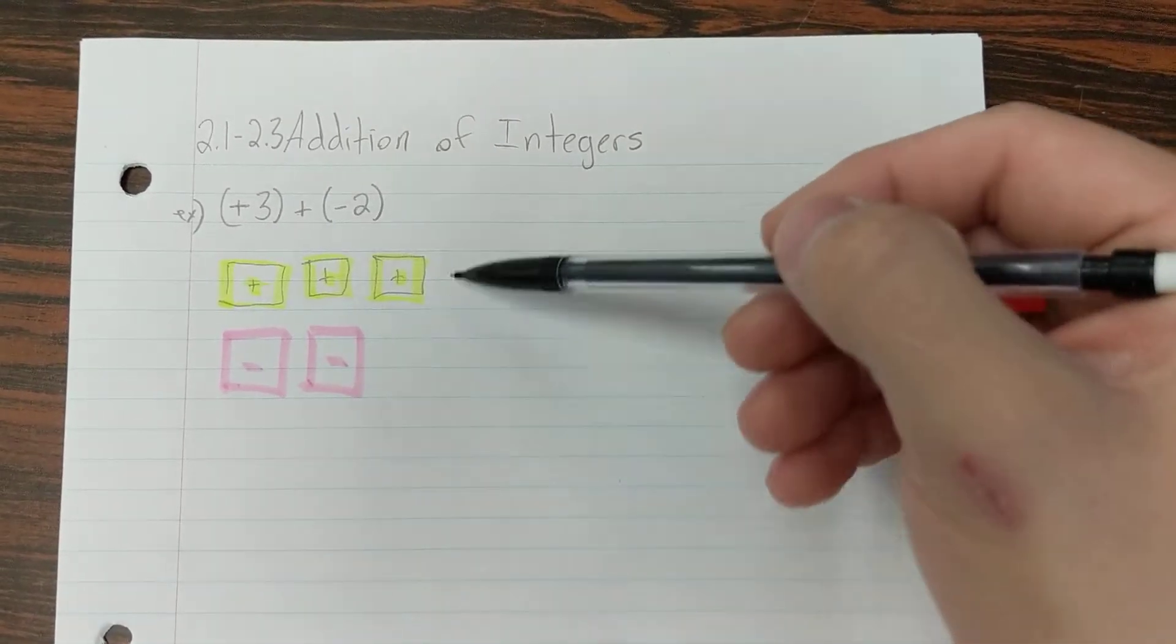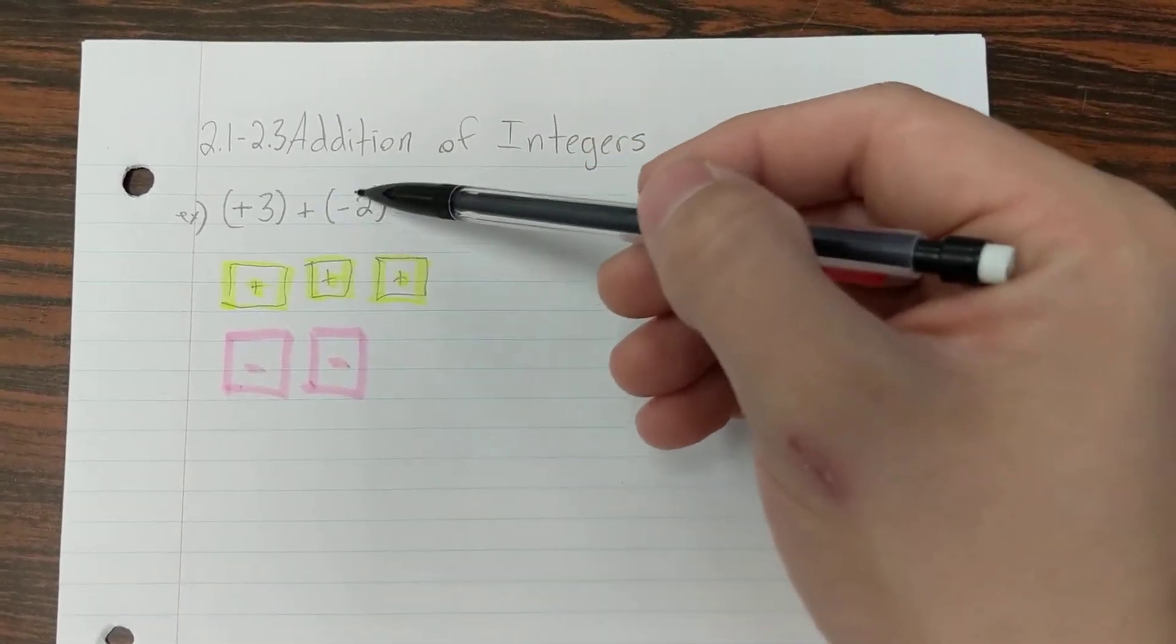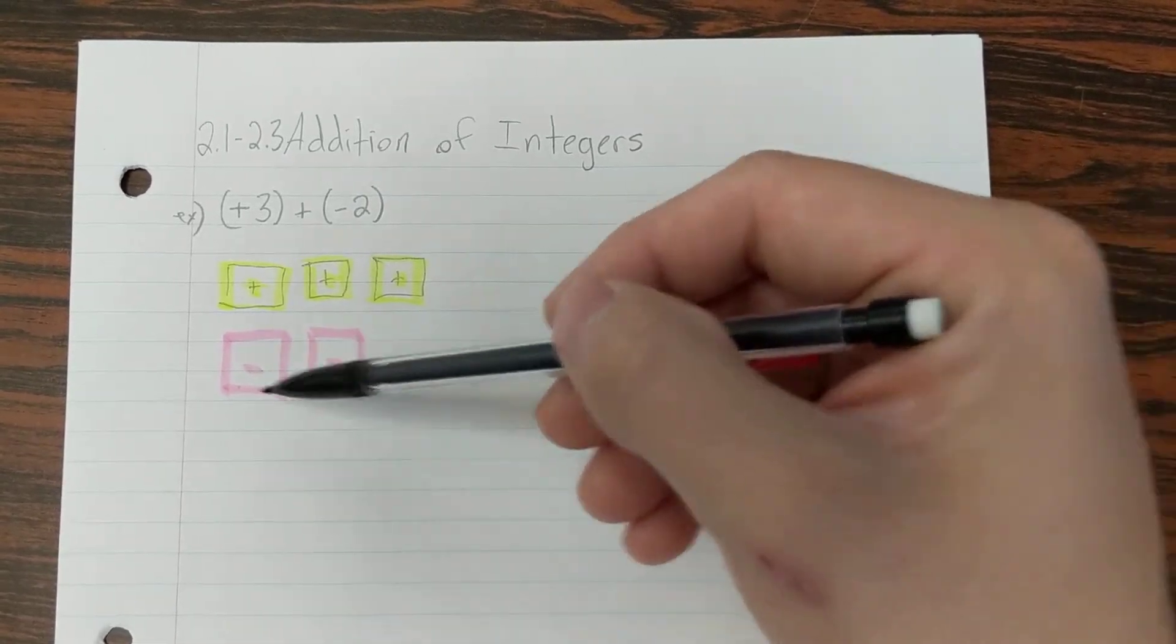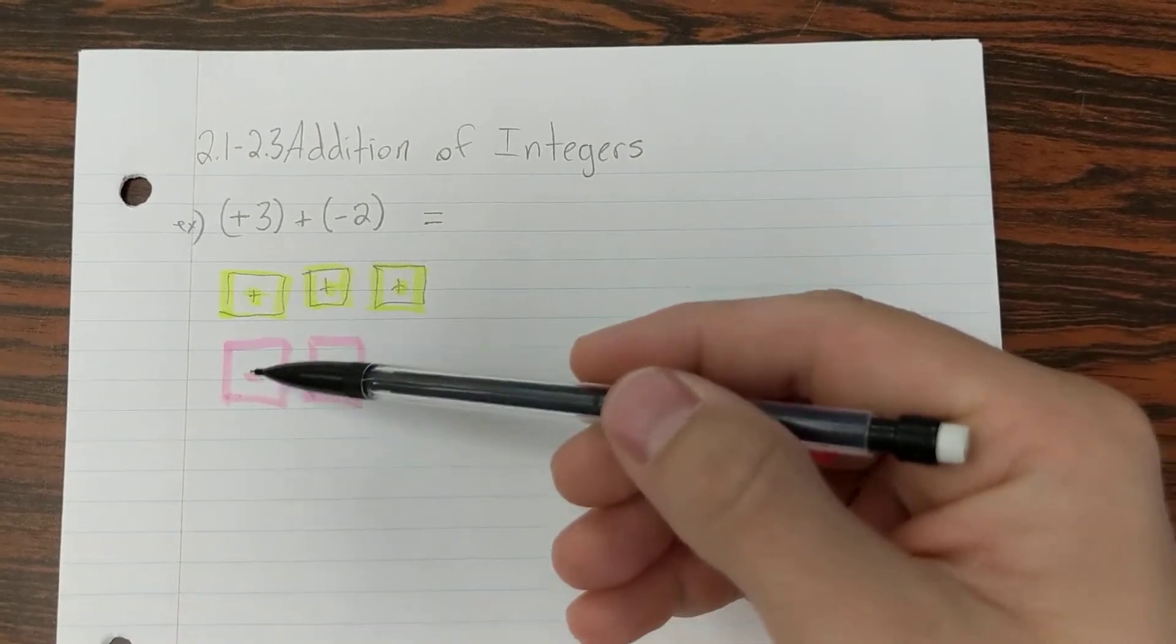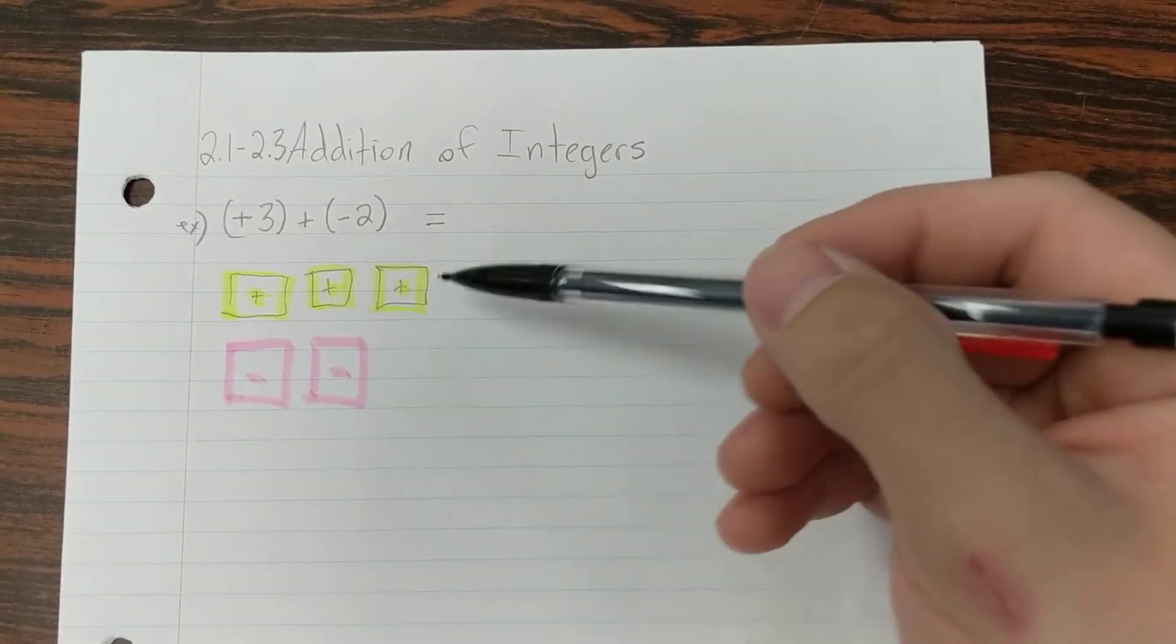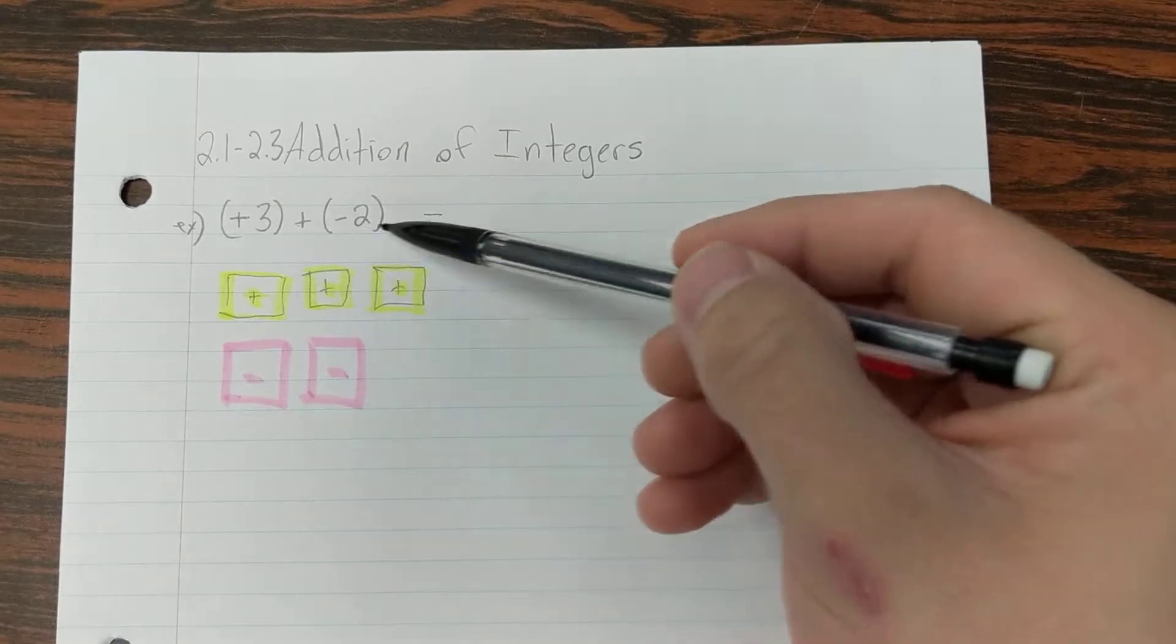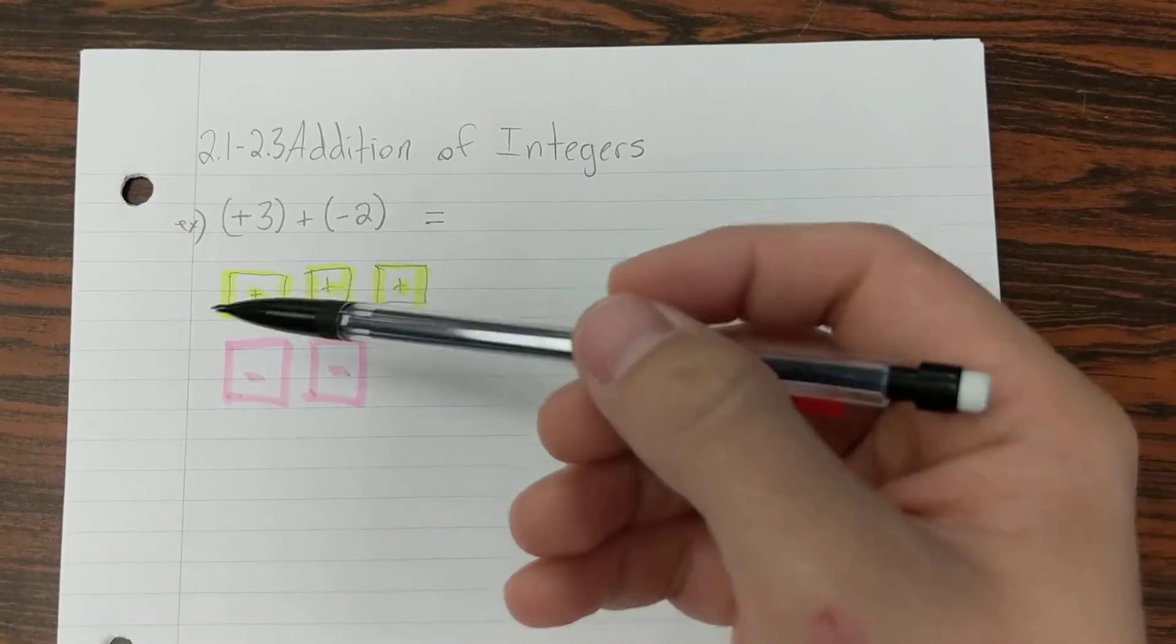And I've added them together. So I've got this group: there's 3 positives and 2 negatives, 3 positives, 2 negatives. Now I've got my tiles set up. Now I've got to think, what would this equal? If I need to write my equation for this, what would it equal?